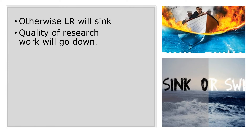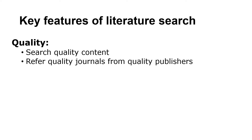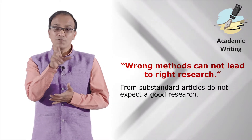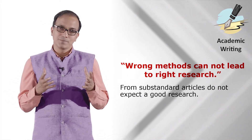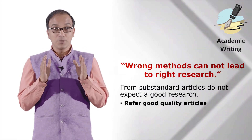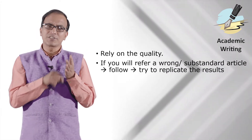The next feature is quality — quality material search. Refer to quality journals and quality books, because wrong methods cannot lead to right research. If you refer to substandard articles, you cannot expect good research. Refer to good quality articles; it is utmost important because quality articles can only lead to reproducible results.